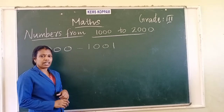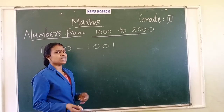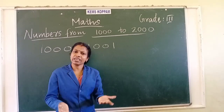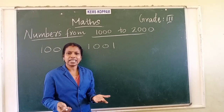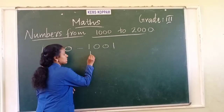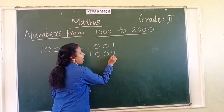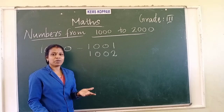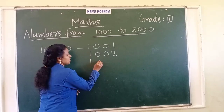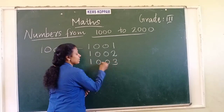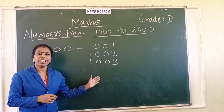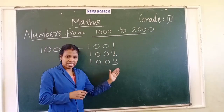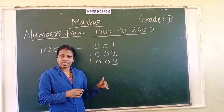This is 1,001. Then what is the next number? After 1,001, again we add 1, then we will get 1,002. Then what is the next number? We can write 1,003. In this way, numbers keep going — 1,003, 1,004, 1,005, etc.